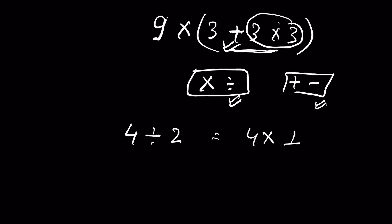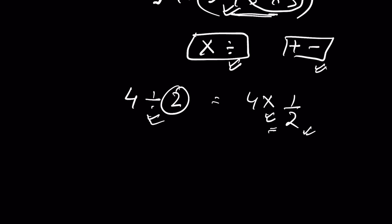Addition and subtraction are also grouped together — they are reciprocal actions, just like multiplication and division. For example, 4 divided by 2 can be written as 4 multiplied by one-half — the reciprocal of 2 — which is why division and multiplication are called reciprocal actions. Similarly, addition and subtraction are reciprocal actions. That is why they have equal priority, even though in practice the order between them doesn't change the answer.